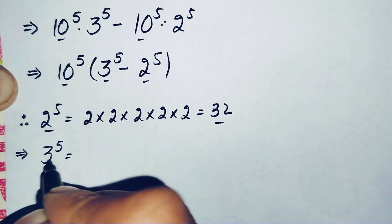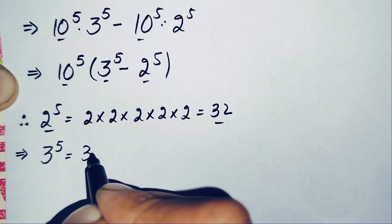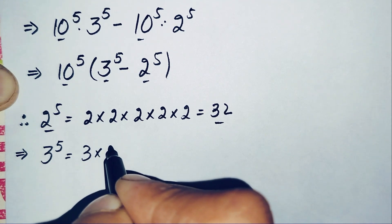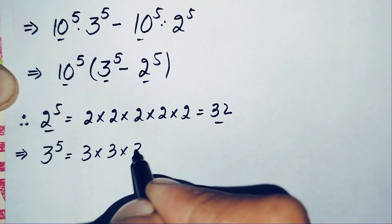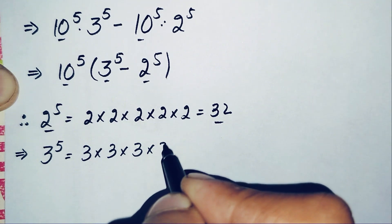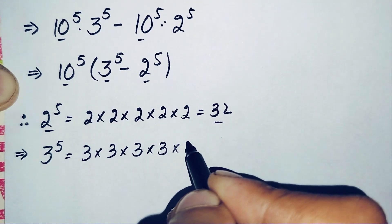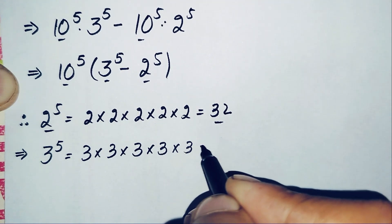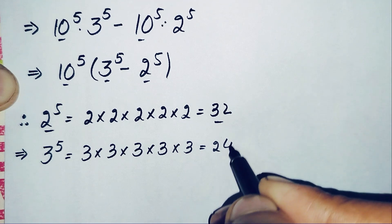Next, 3 raised to power 5: multiplying 3 five times — 3 times 3 is 9, times 3 is 27, times 3 is 81, and 81 times 3 is 243. So 3 raised to power 5 equals 243.